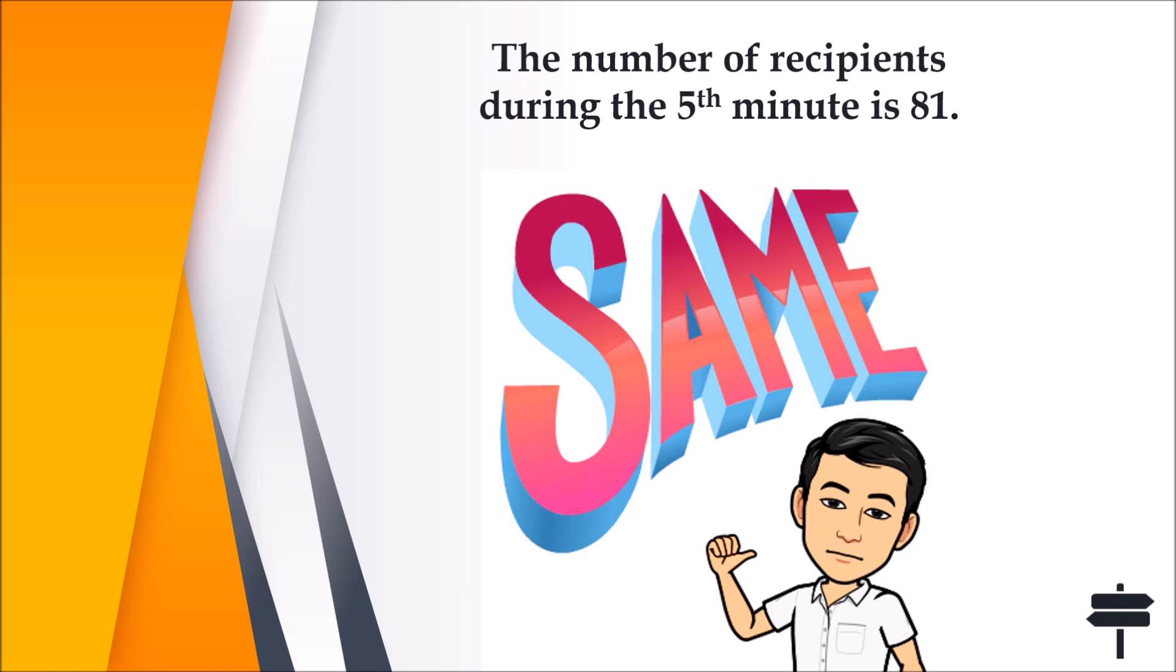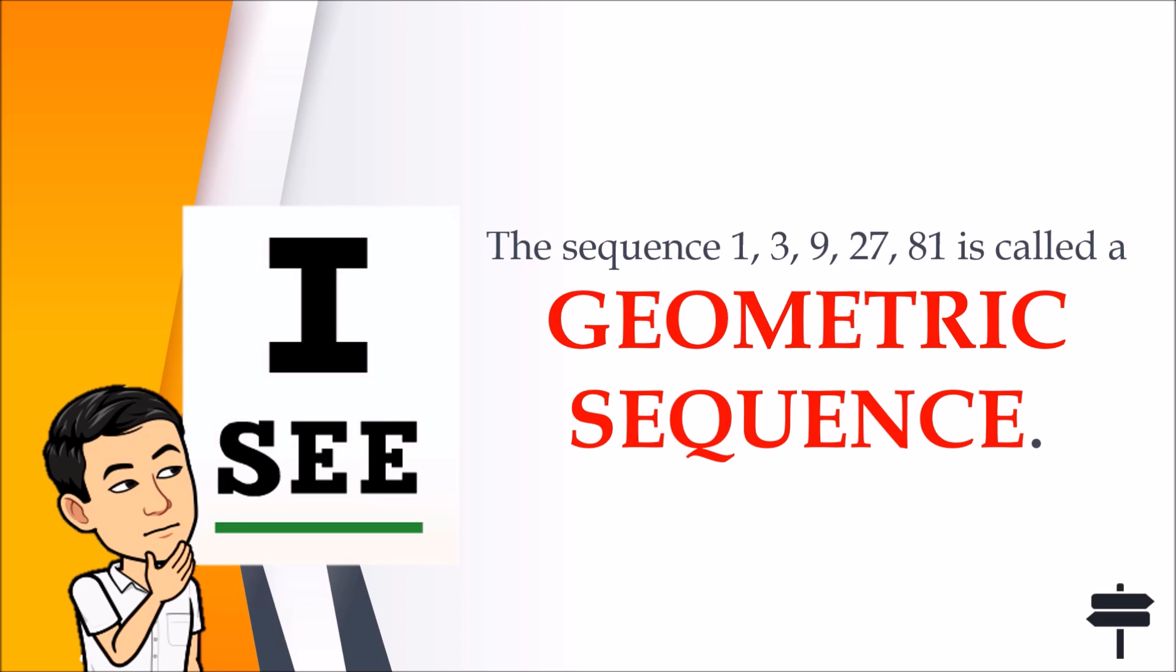The sequence 1, 3, 9, 27, 81 is called a geometric sequence. How do you define a geometric sequence?